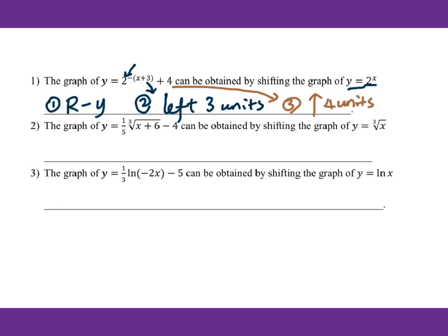For number 2, the graph of y equals this can be obtained by shifting the graph of y equals the cubic root of x. First step: this 1 over 5 means vertically compressed by a factor of 1 over 5. Then second step: this plus 6 — that's left 6 units.